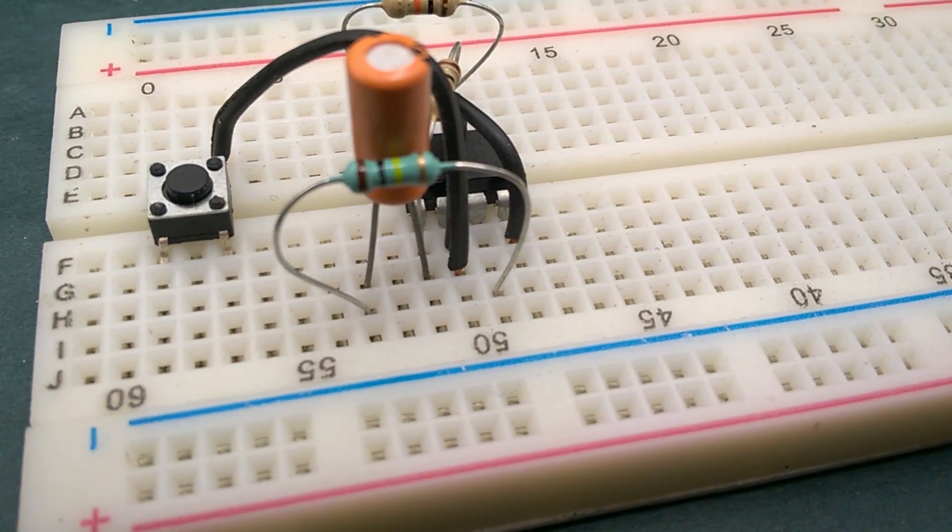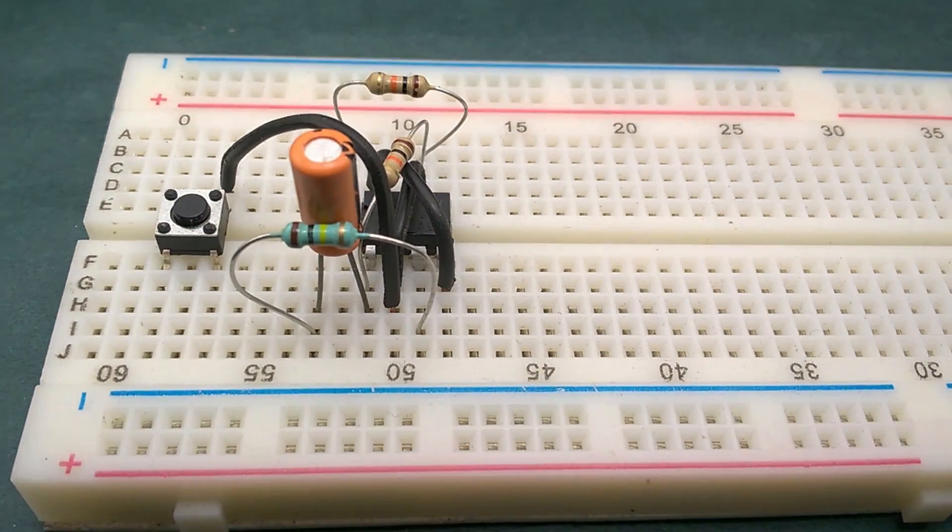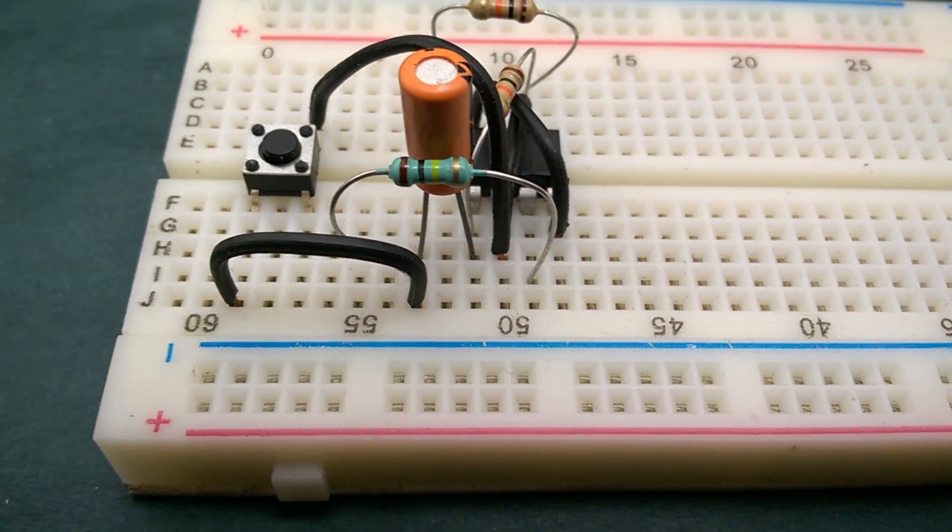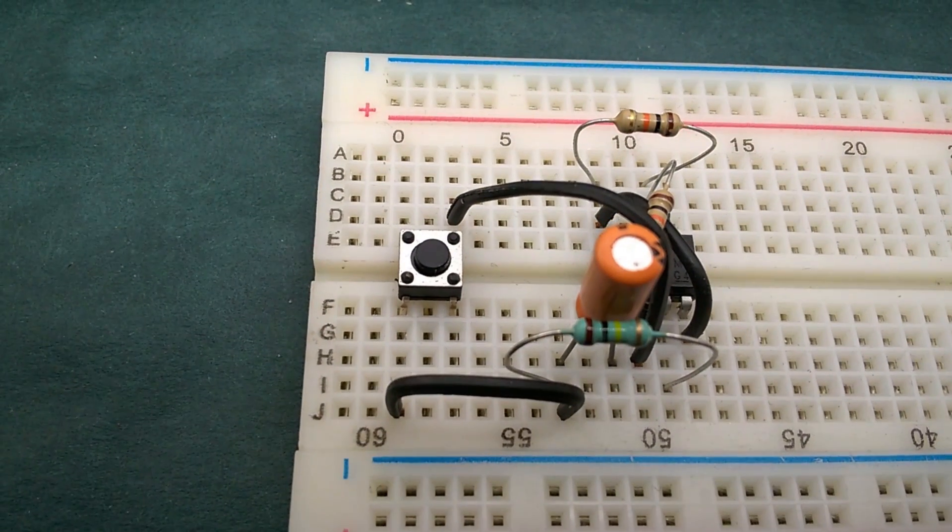Now, connect pin 2 of the IC to one terminal of the pushbutton switch. Then connect positive terminal of the capacitor to any of the two terminals of the pushbutton switch which are not connected to the previously connected terminal.